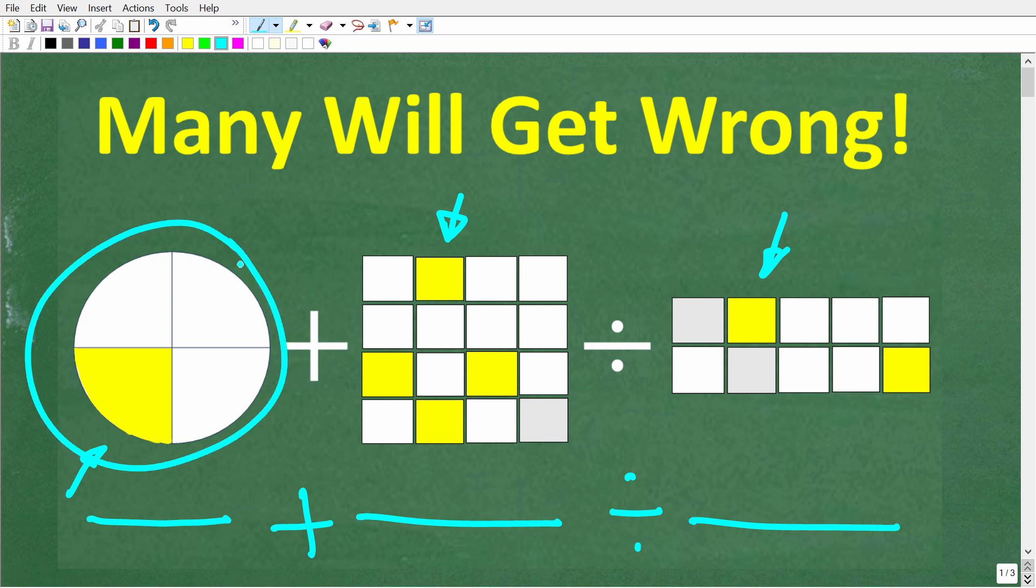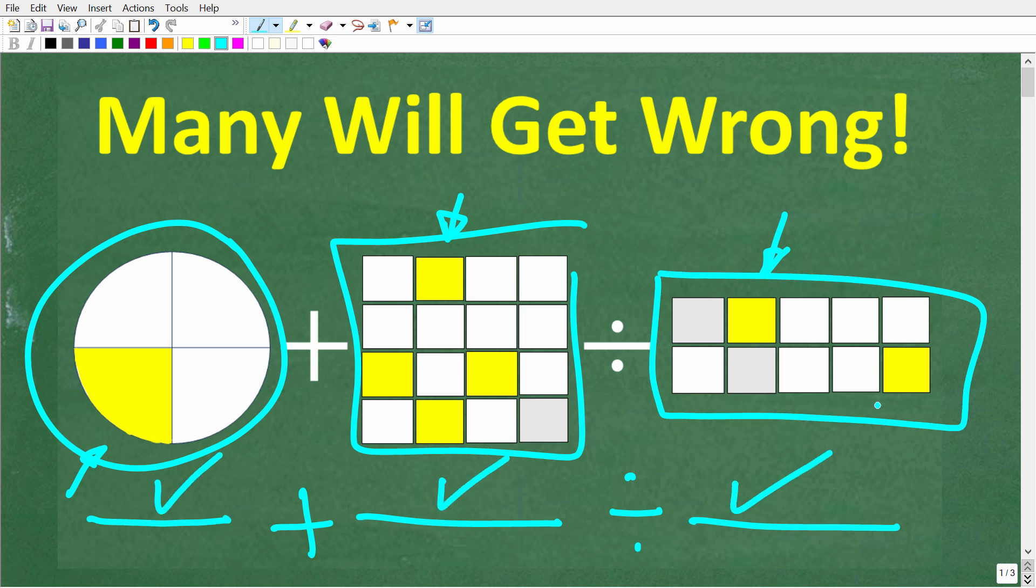Okay, so we have this circle plus this square divided by this rectangle. Of course, these all represent fractions. So if you think you know how to do this, go ahead and put your answer into the comment section. I'm going to show the correct answer in just one second. Then of course I'm going to fully explain how to solve this very interesting fraction graphical problem.